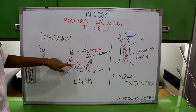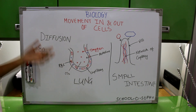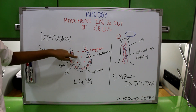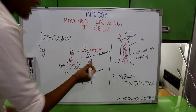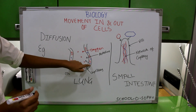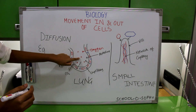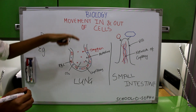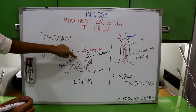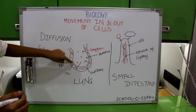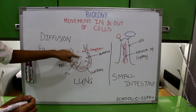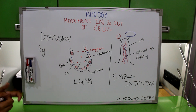The vice versa happens with carbon dioxide molecules. Because carbon dioxide is a waste product of respiration, it is produced in greater amounts in the blood than it is in the lungs. So carbon dioxide diffuses out of your blood into your lungs — from an area of higher concentration to an area of lower concentration. This carbon dioxide is then expelled from the body when you exhale. So oxygen diffuses from the lungs into the blood, and carbon dioxide diffuses from the blood into the lungs — both from higher to lower concentration.